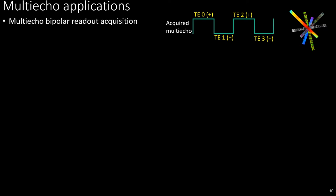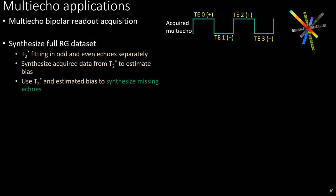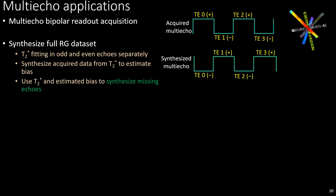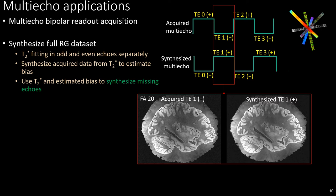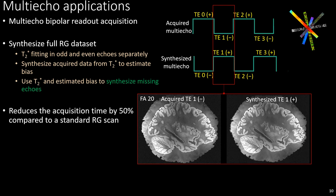Moving to multi-echo applications, the multi-echo sequence encodes bipolar readouts. A reverse gradient scan would involve repeating this bipolar scan with opposite readout polarity. Instead, we choose to synthesize the reverse polarity scan from a single bipolar acquisition. The synthesis involves first fitting T2-star in the odd and even echoes separately, then estimating a multiplicative bias in the T2-star estimates at every voxel, and using both to synthesize the reverse polarity echoes. This gives us both readout polarities for every echo, and saves 50% of scan time by removing the need to acquire the reverse polarity data altogether.